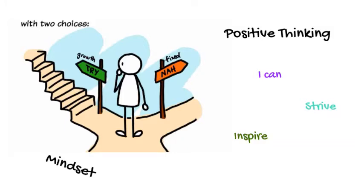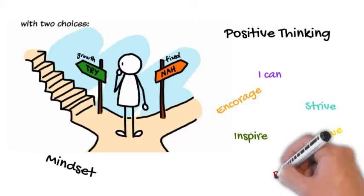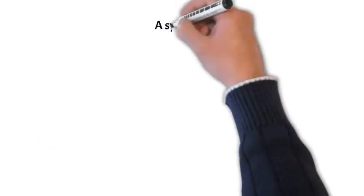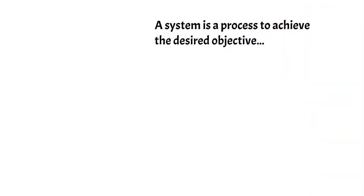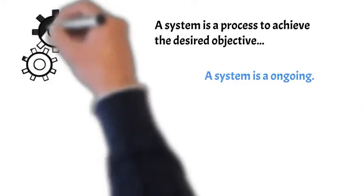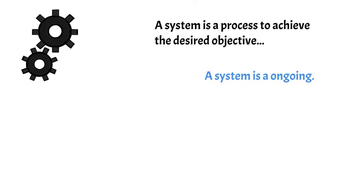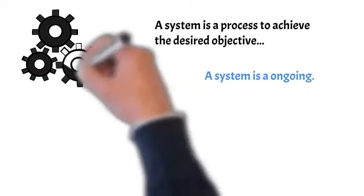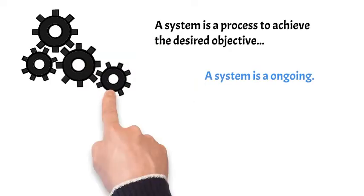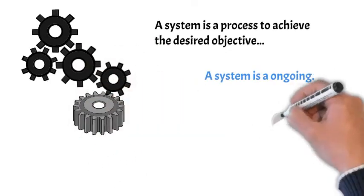You will see language advertisements that say you can speak a foreign language in days, weeks, or months. This is true. Unfortunately, the reality is people want to have a conversation rather than just speak. A system is the process to achieve the desired objective. A system is ongoing. It does not end when the goal has been achieved because the goal more often than not actually has a deeper meaning than a one-time event.